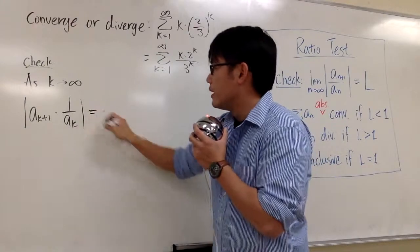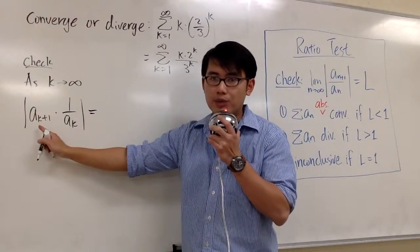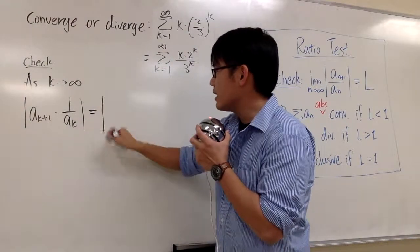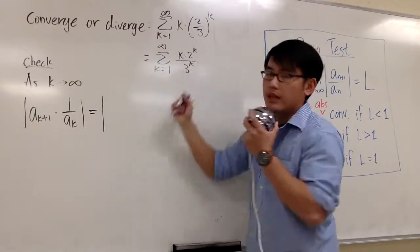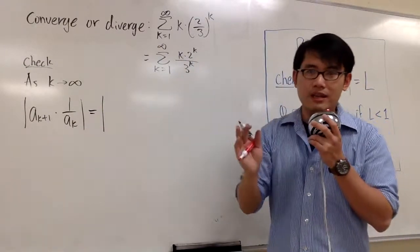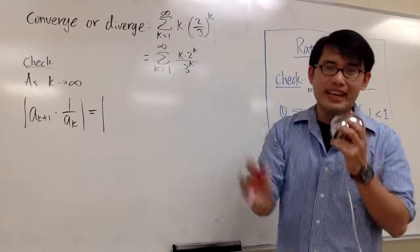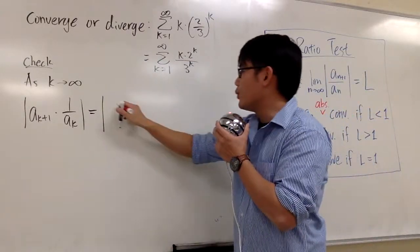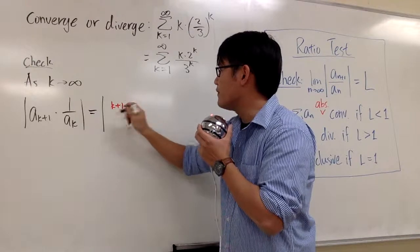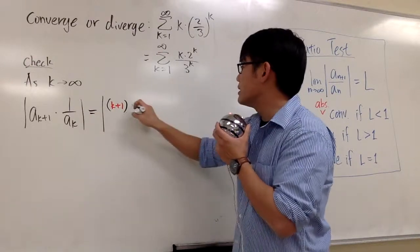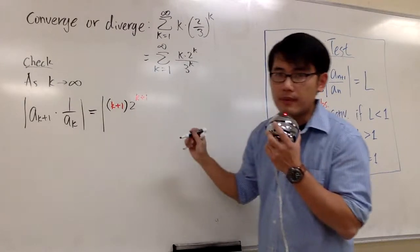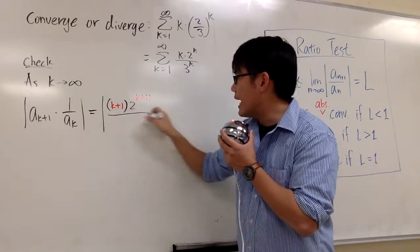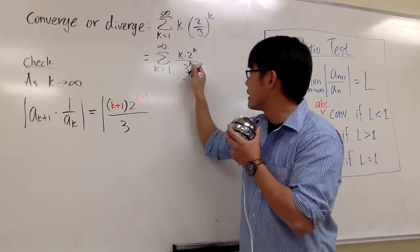I'm going to write an expression for a_(k+1) first. So to do that, and by the way we still have the absolute value, I just look at this expression and change all the k to k plus 1. Here we will have k plus 1 first times 2 to the k plus 1. On the bottom, we have 3 to the k plus 1.